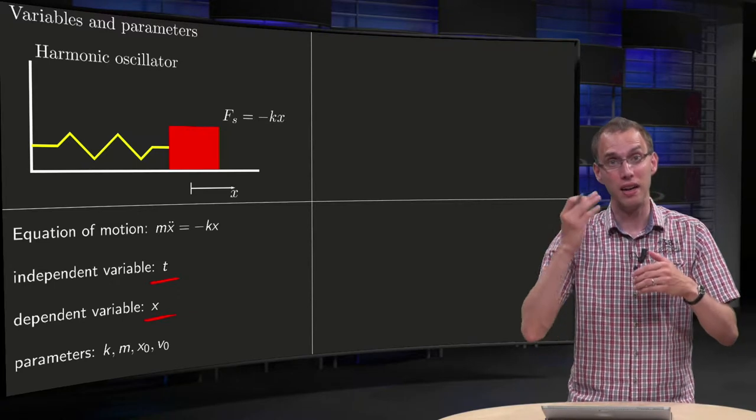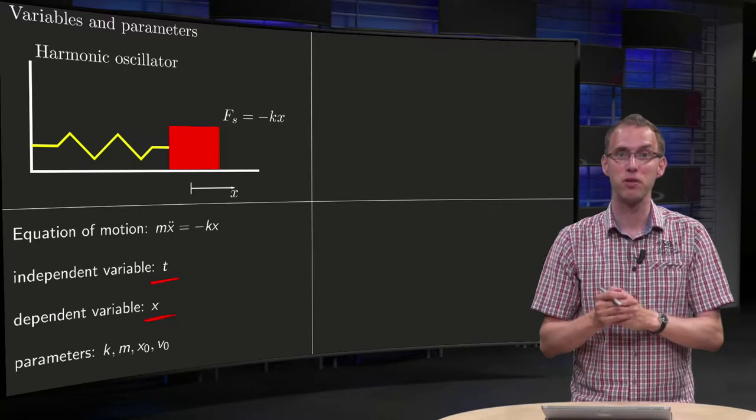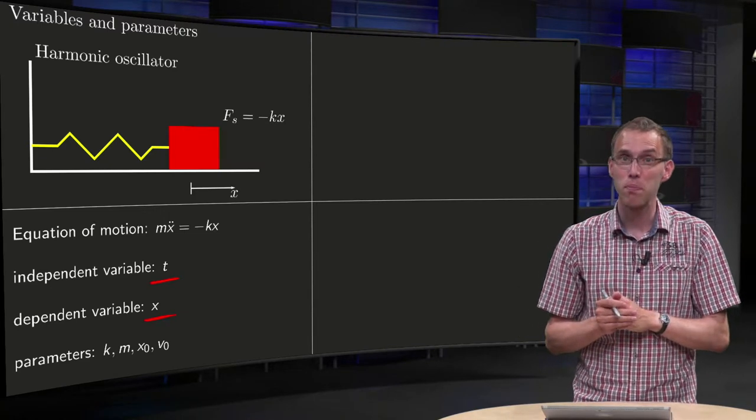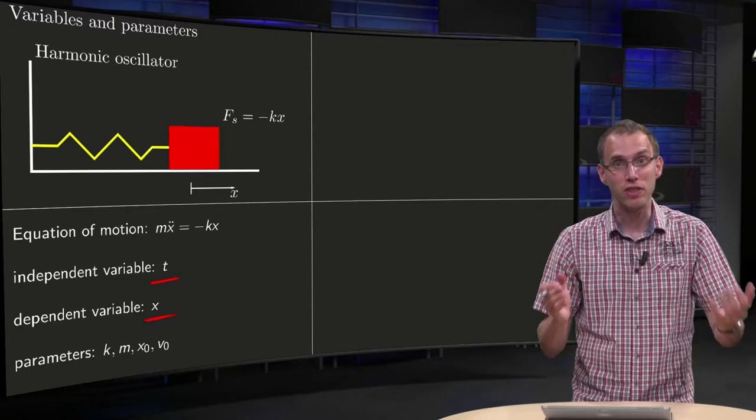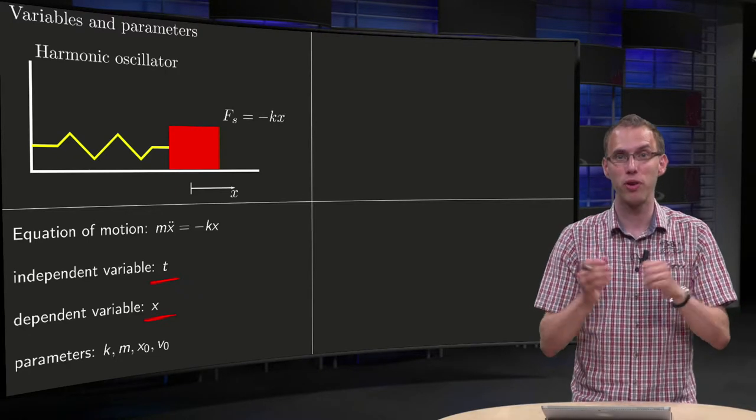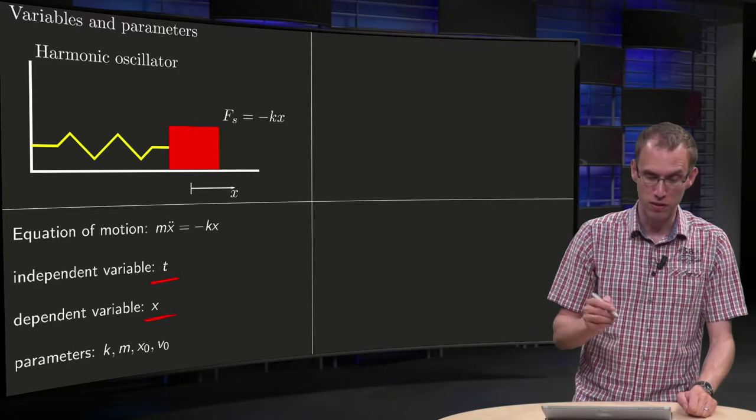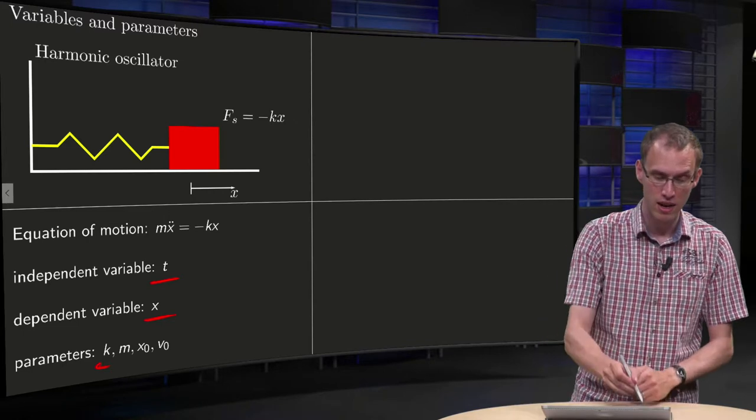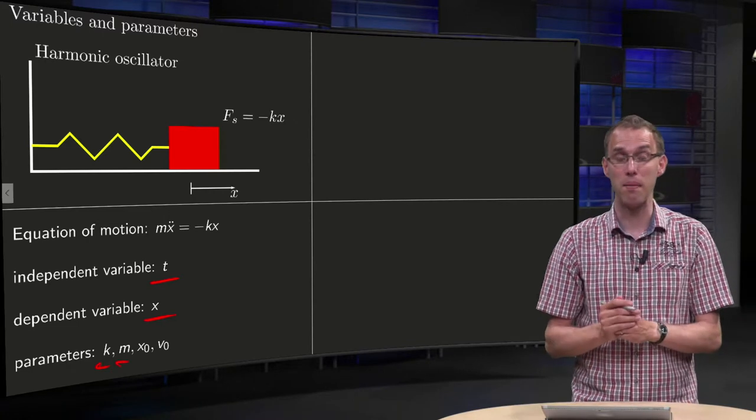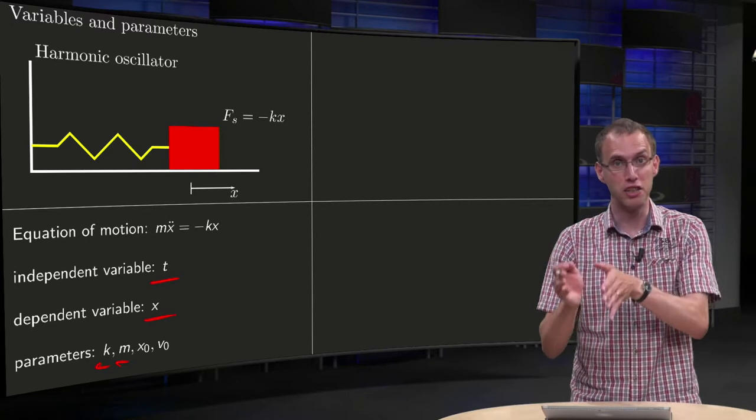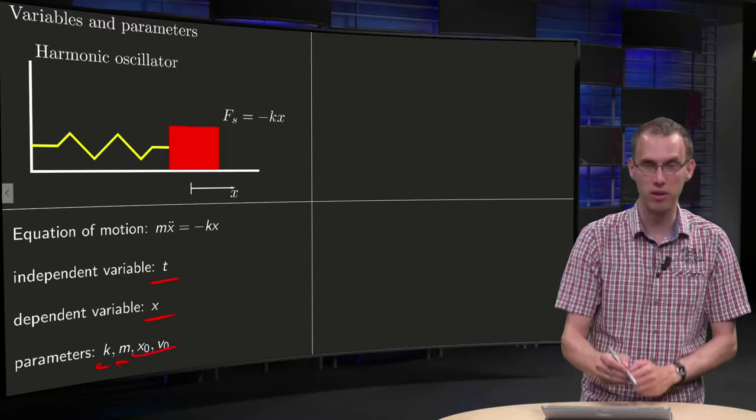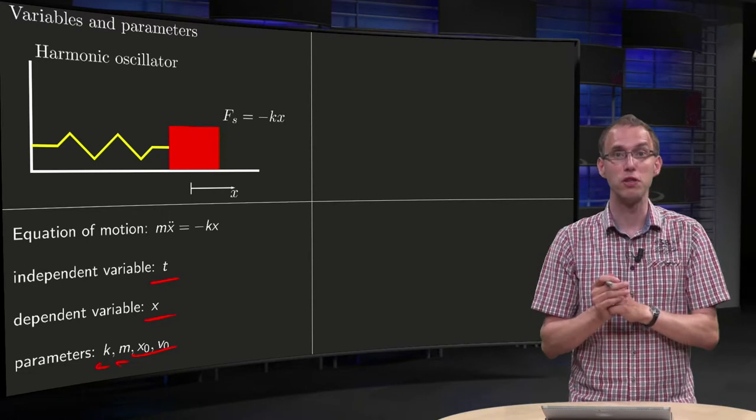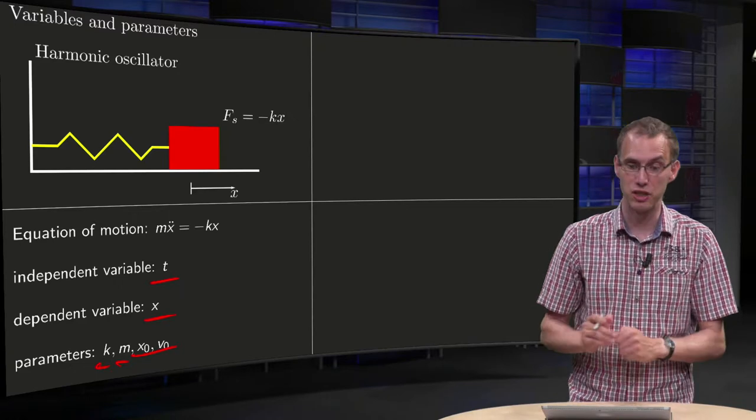So that's the idea of independent and dependent variables. T can vary freely, but once t is given, we know x. So what are parameters in this case? Those are the things that we, within the model, will use as constants. In this case, for example, the spring constant k, the mass m, and the initial position and initial velocity x0 and v0. Once those are given, those four parameters, then the model is fully specified and you can compute your x of t.